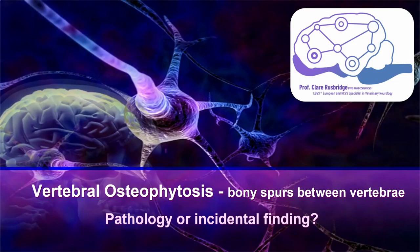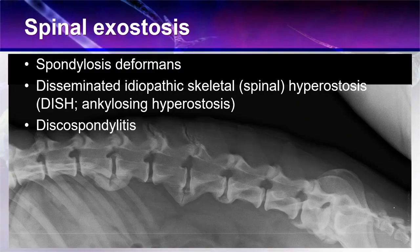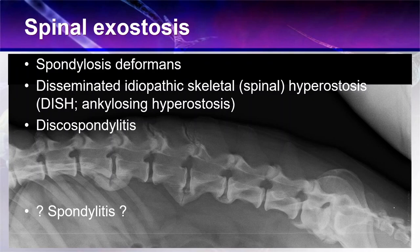So vertebral osteophytosis or bony spurs between the vertebrae — is it pathology or is it just an incidental finding? We're going to talk about three different types of spinal exostosis: spondylosis deformans, disseminated idiopathic skeletal — or some people say spinal — hyperostosis, often referred to as DISH, which in humans is referred to as ankylosing hyperostosis. We're also going to talk about discospondylitis and give a mention to spondylitis.